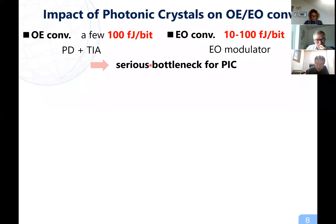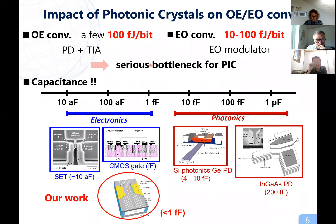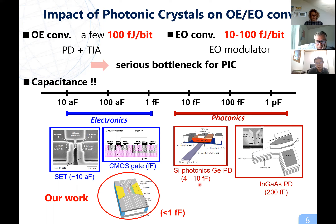This bottleneck is primarily due to the capacitance — we realized this some years ago. This is a comparison of capacitance for various devices. The capacitance of electric devices is very small, less than femtofarad. However, conventional OE and EO conversion devices have somewhat larger capacitance than electric devices, and this capacitance limits the OE and EO conversion efficiency. We have achieved very small capacitance for OE and EO conversion devices by using photonic crystals.